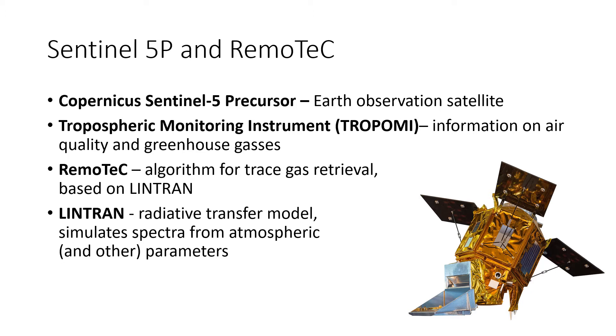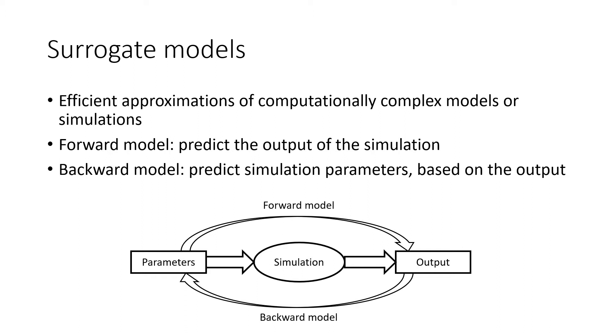One way to do this is through the use of so-called surrogate models. These are efficient approximations of computationally complex models or simulations. In our case, the LINTRAN simulation takes atmospheric parameters as input and provides the output of spectra. Forward surrogate models learn to predict the output of the simulation based on the parameters. We are also interested in the so-called backward surrogate models, which learn to predict which simulation parameters would produce a given output. This is particularly useful in estimating the simulation parameters or the parameters of a physical model based on measurements.